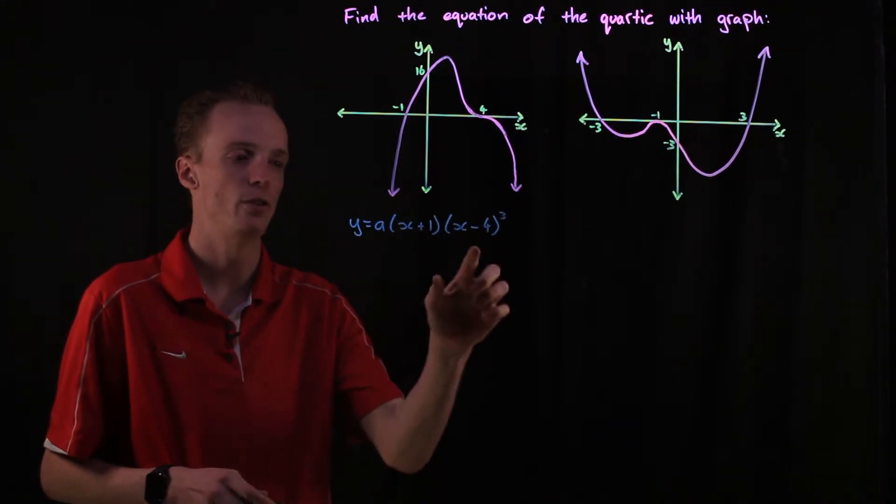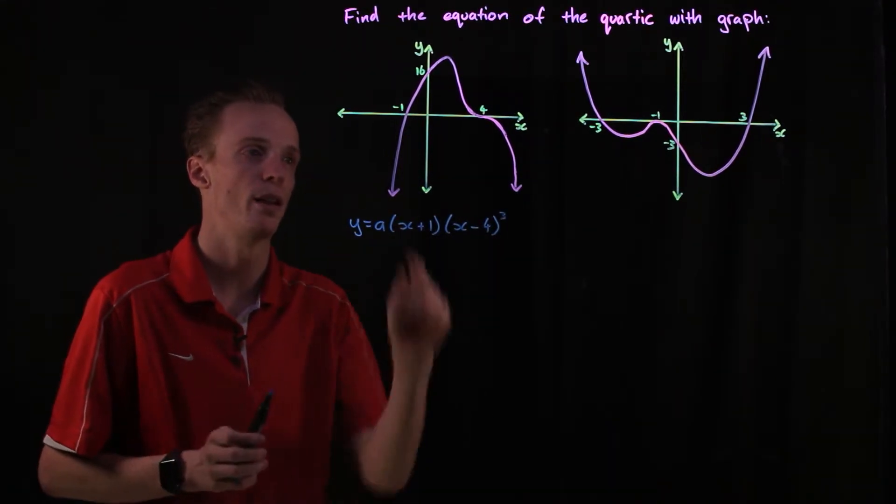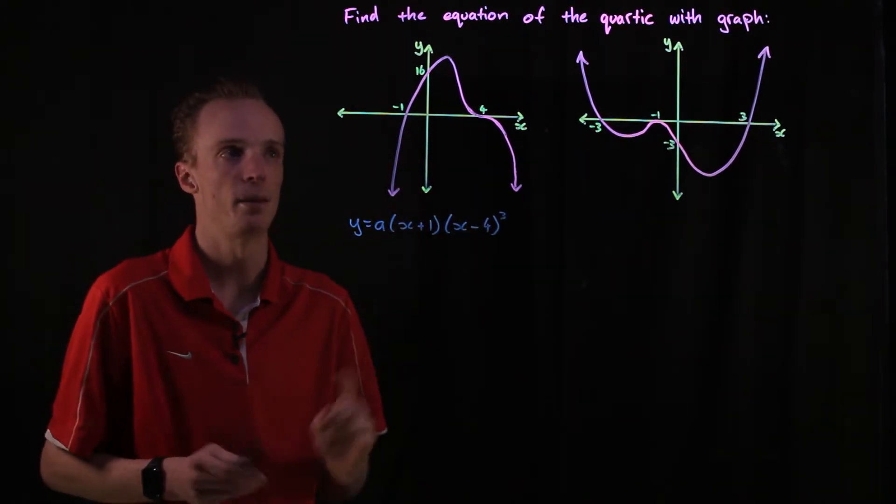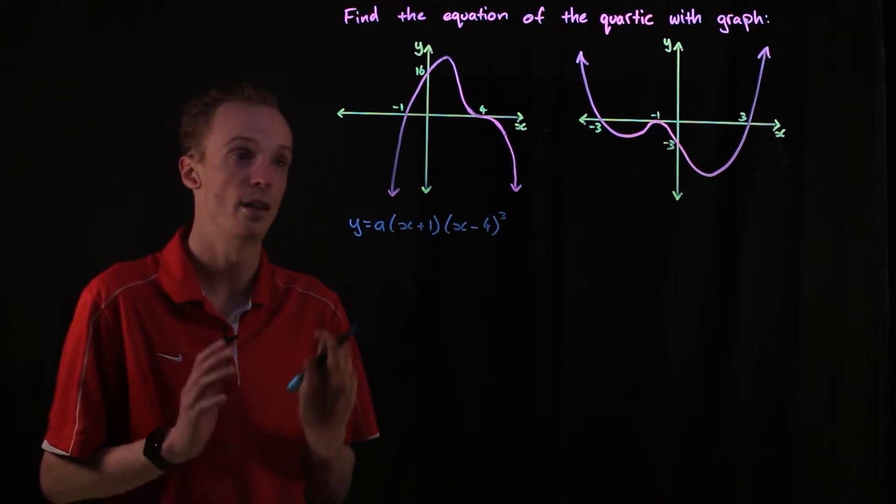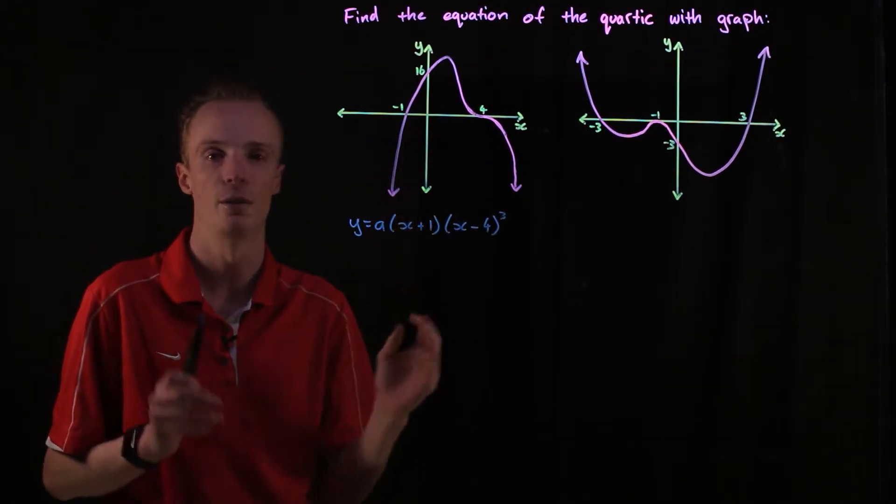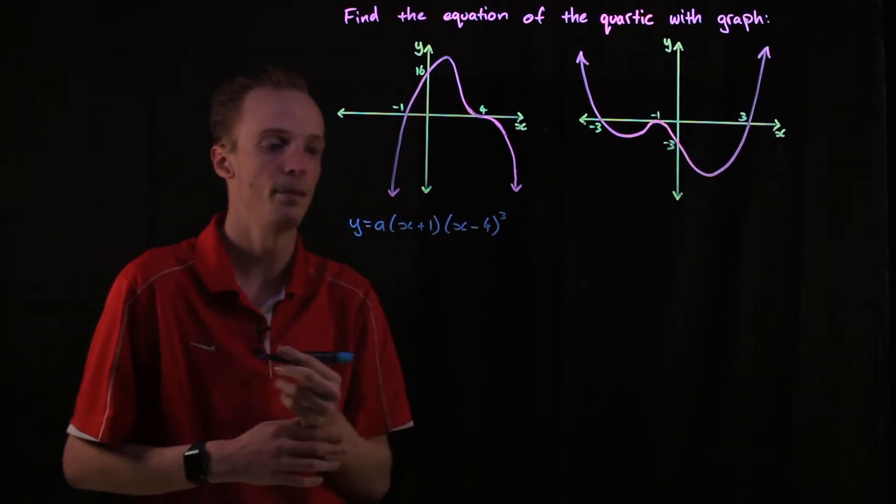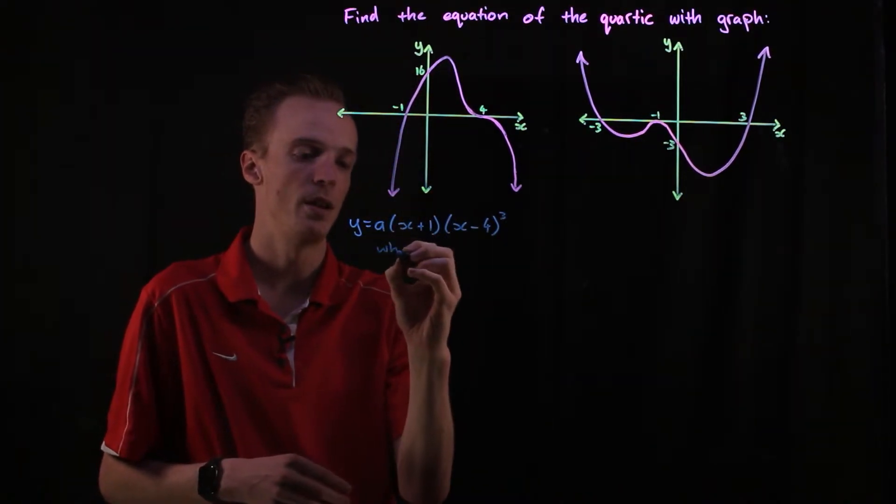Now what we've got is this general function for all cubic polynomials that cut through at those two points in that manner. But I need to define this value of a, so to do that I need to substitute another point that's not one of the roots I've already used.